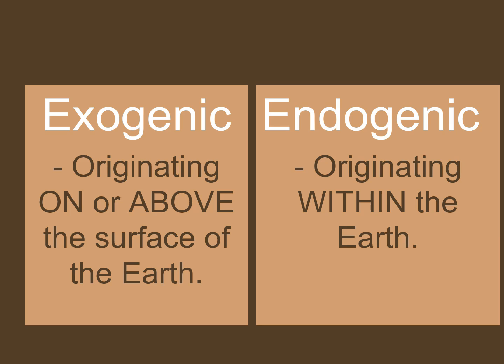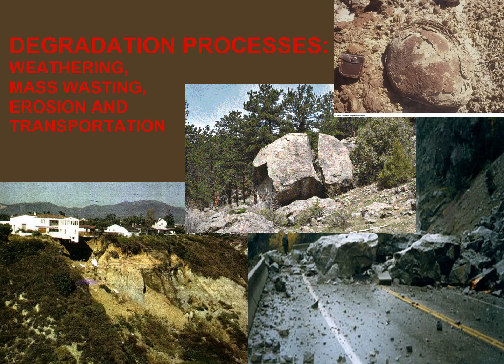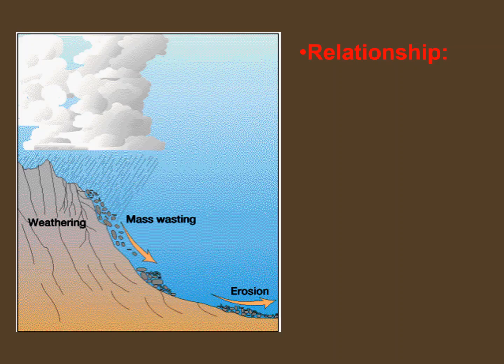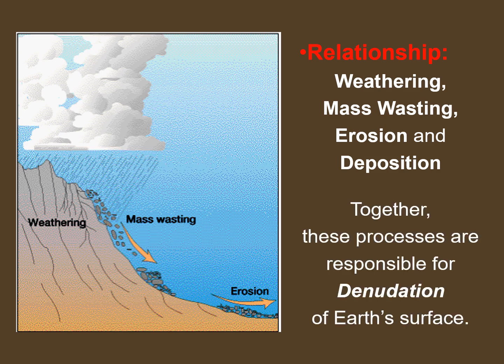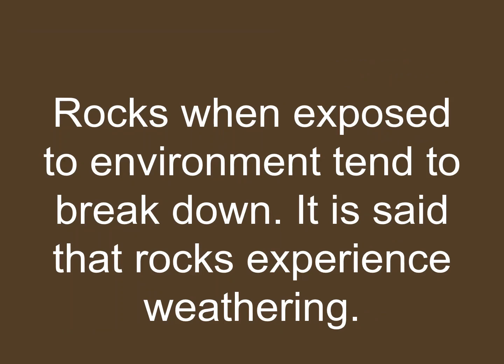Exogenic processes are genetically related to the atmosphere, hydrosphere, and biosphere. The degradation processes involved include weathering, mass wasting, erosion, and transportation. All exogenic processes are covered under the general term 'denudation,' which means stripped of or uncovered. Together, these processes are responsible for the denudation of the earth's surface. When rocks are exposed to the environment, they tend to break down — this is called weathering.